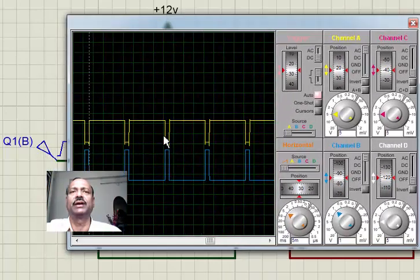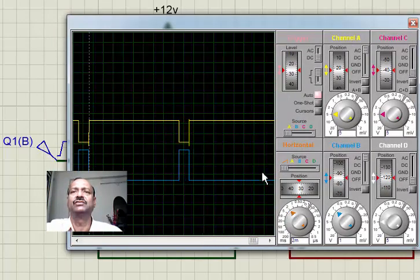I am giving an input of on and off. Now let us expand this so that you can see it better. So the yellow one is across the transistor and this blue one is the input voltage.